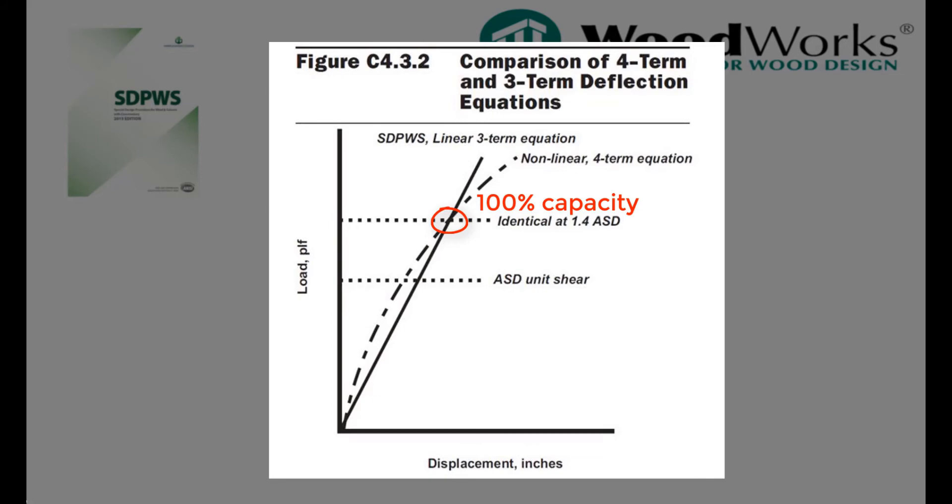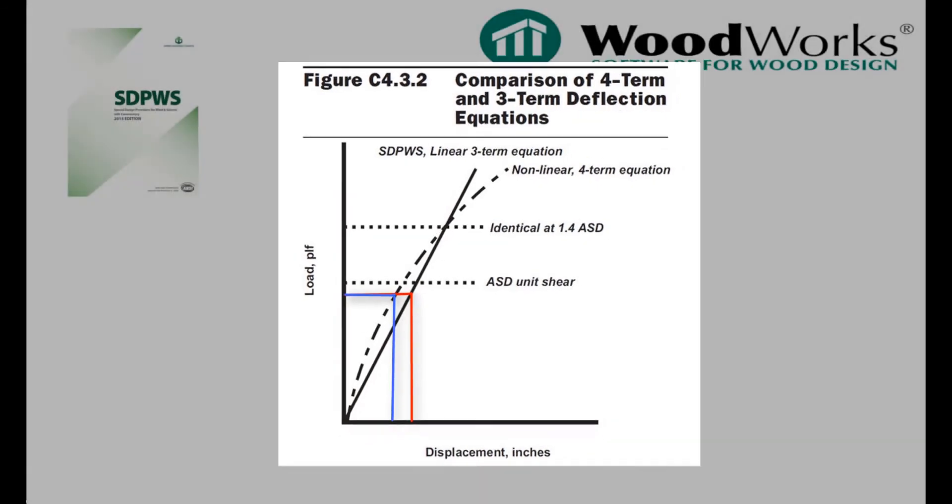In other words, if a shear wall is loaded to its design capacity, the deflection would be calculated to be the same using either equation. It also shows that for forces lower than the design capacity, the three-term will approximate a higher deflection than the more accurate nonlinear calculation.